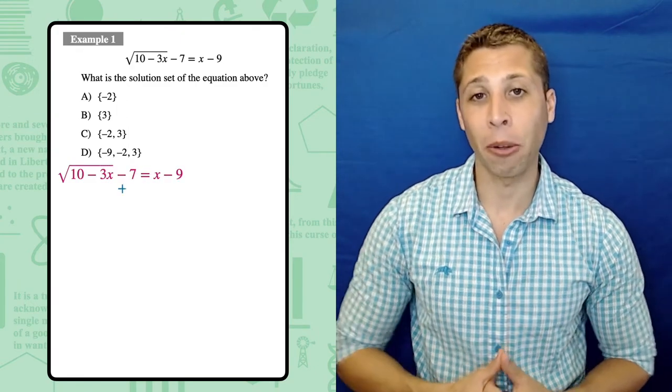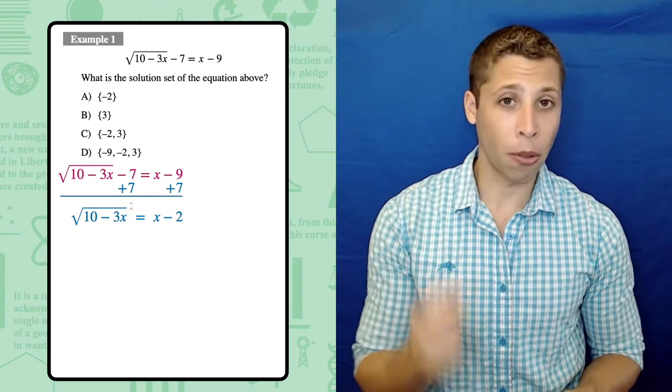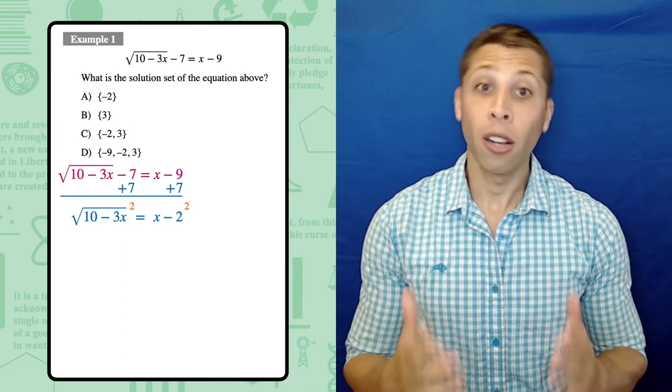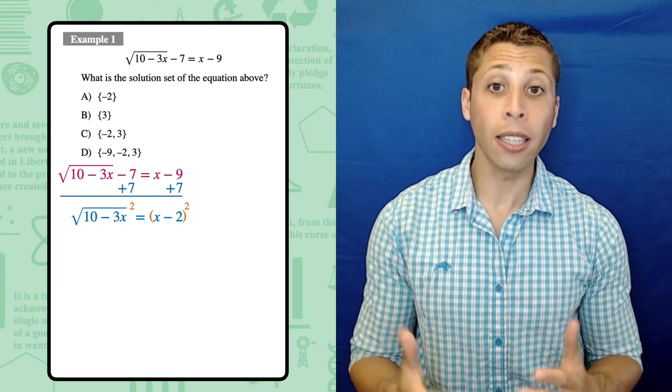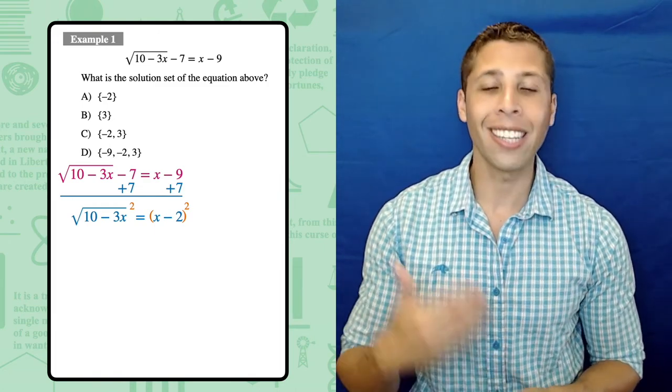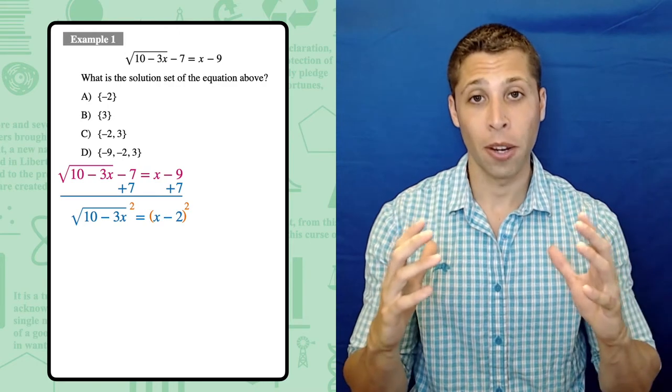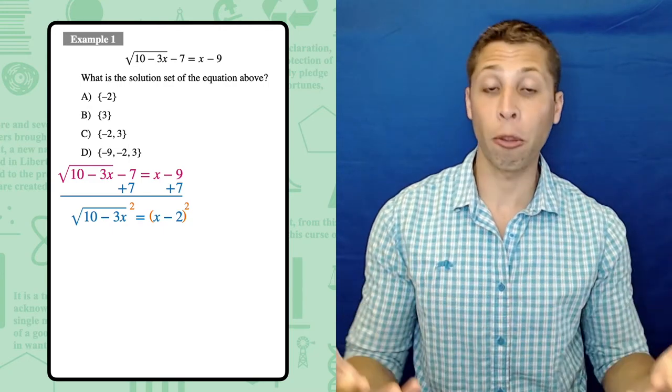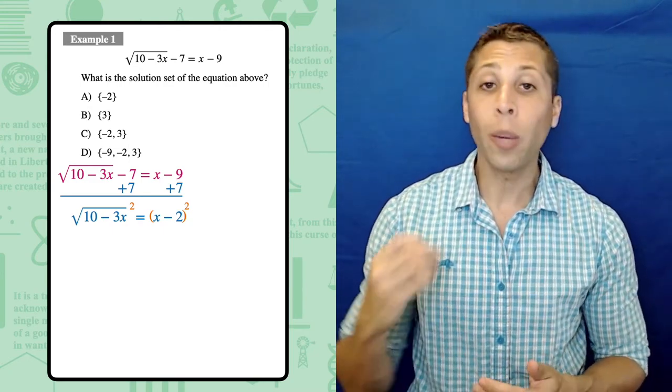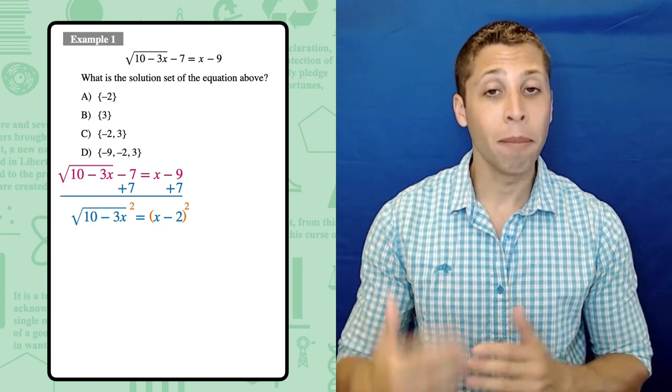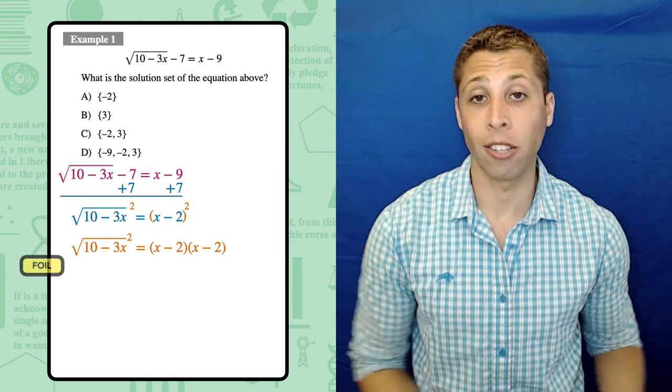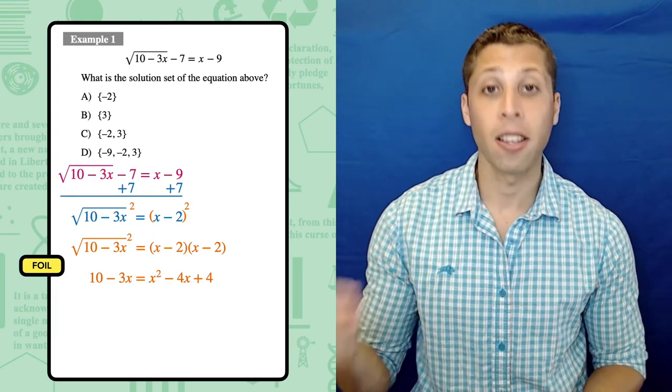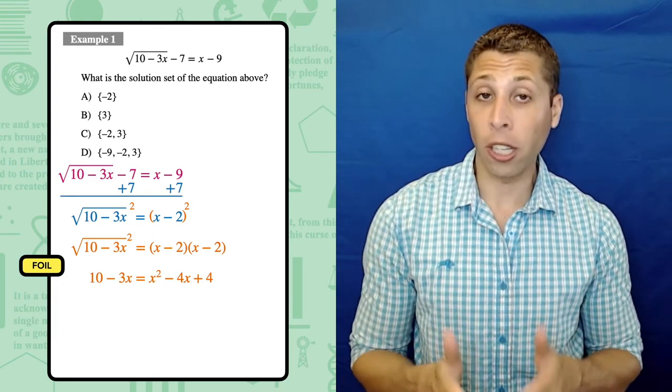First, add 7 to both sides to move it away from the radical. Then square both sides to get rid of the radical. But on the right side, we need to be really careful that we don't mess this up. First of all, we should put some parentheses here to make it clear that we're not just squaring the 2. We're squaring the entire term x minus 2. Even if we do that though, there's still a chance that we make a mistake. We can't just distribute this square to both parts and get x squared minus 4. We need to remember that x minus 2 squared means x minus 2 times x minus 2. We have to FOIL this out to get a more complicated quadratic. x squared minus 4x plus 4.